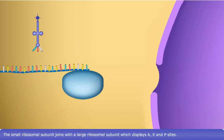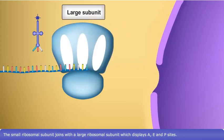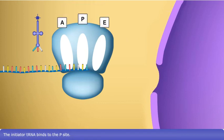The small ribosomal subunit joins with a large ribosomal subunit which displays A, E, and P sites. The initiator tRNA binds to the P site.